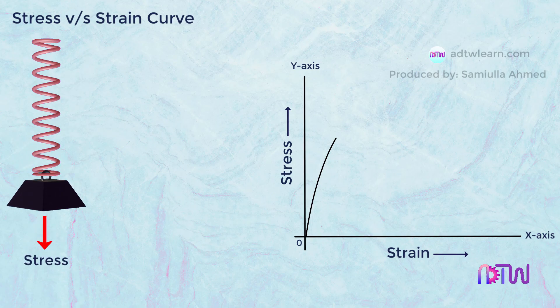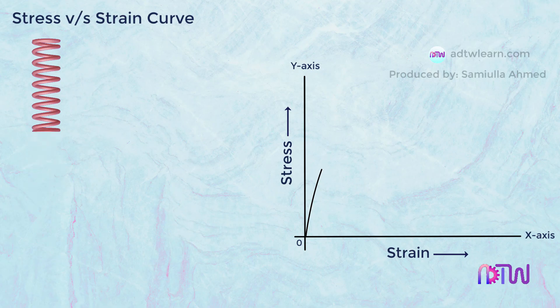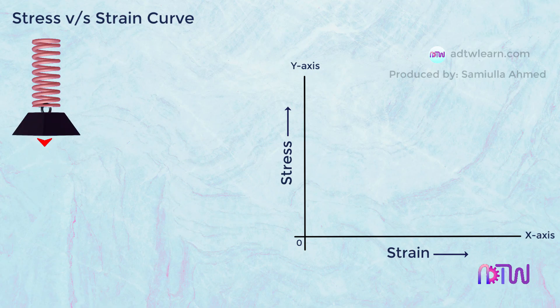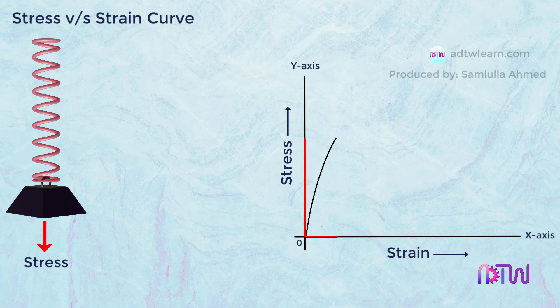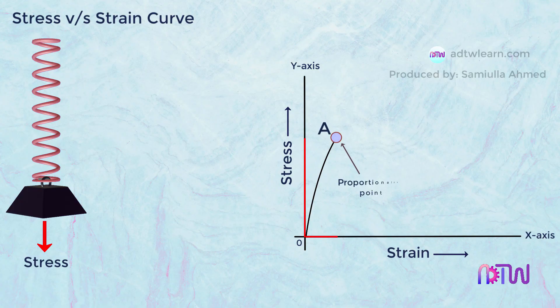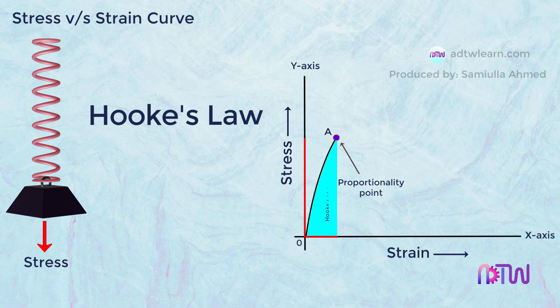If we remove stress acting on the body, it regains its original shape. Again if we apply stress on a body, it undergoes strain. It happens only up to a certain point, and this point is called the proportionality point. It is the region in which the material obeys Hooke's law.